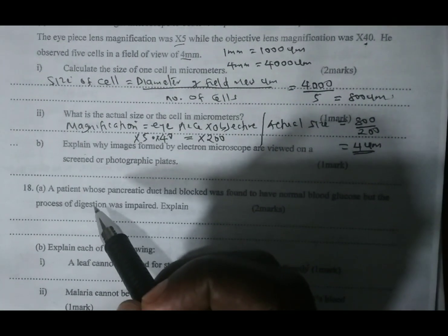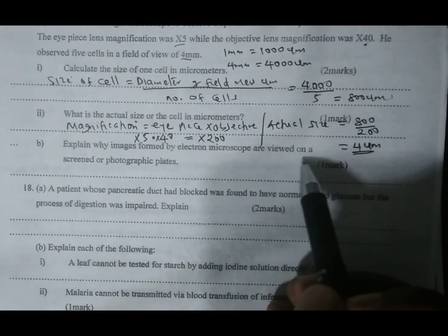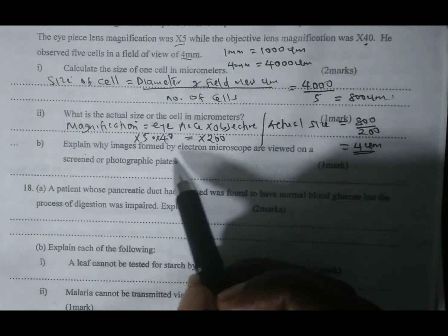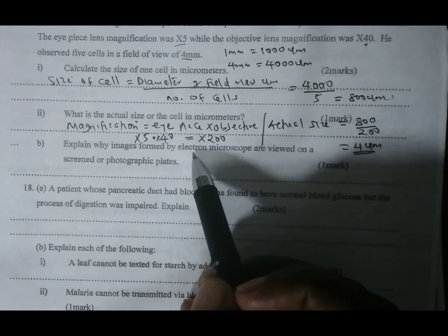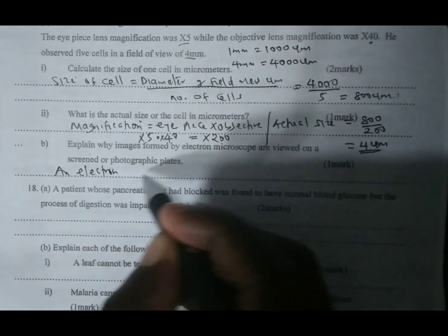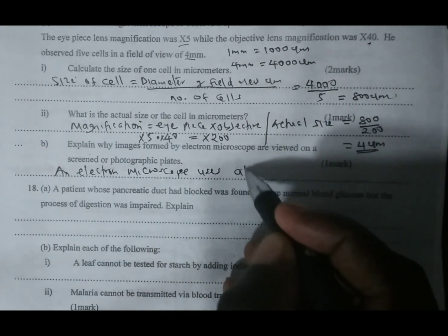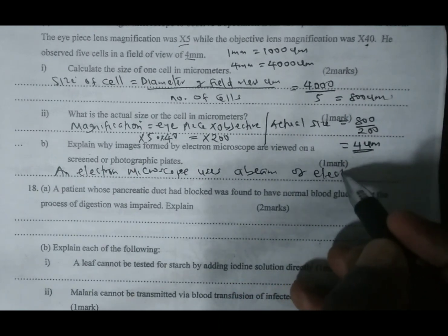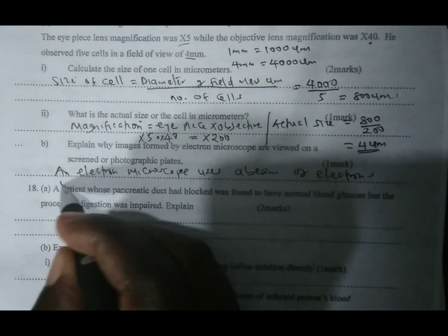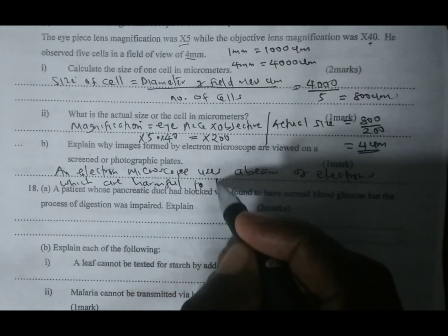We go to part B of the question: Explain why images formed by electron microscope are viewed on a screen or photographic plates. Remember, an electron microscope uses a beam of electrons which are harmful to the human eye. So our answer is: an electron microscope uses a beam of electrons which are harmful to the human eye.